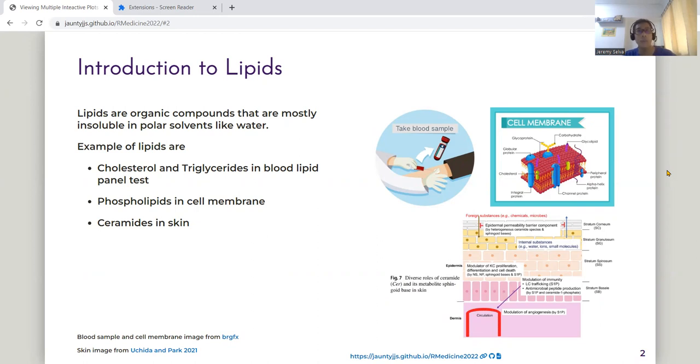A lesser known lipid called ceramide can be formed in the skin used as a protective barrier as well as cell signaling during the wound healing and immunity response process.